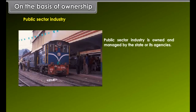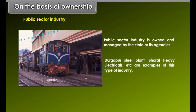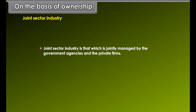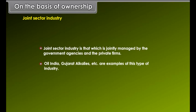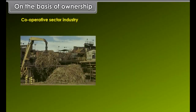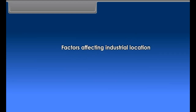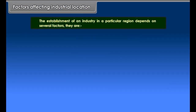Public sector industry is owned and managed by the state or its agencies. Cooperative sector industry is owned and managed by a group of people who form their own cooperative society. The members are generally the producers of raw material. In India, most sugar mills run under the cooperative sector, and the dairy industry is another example of cooperative sector.